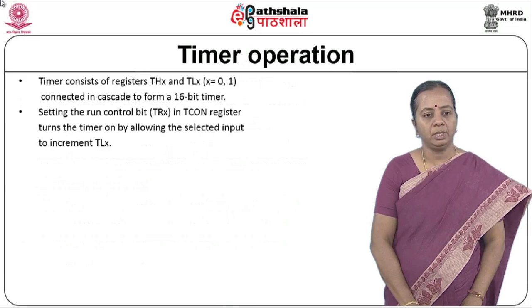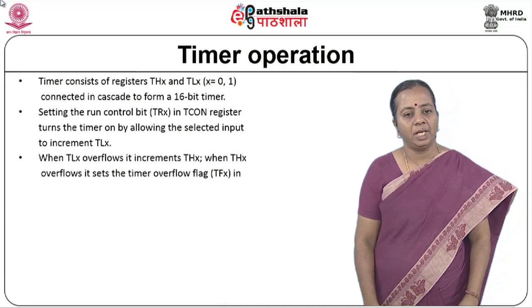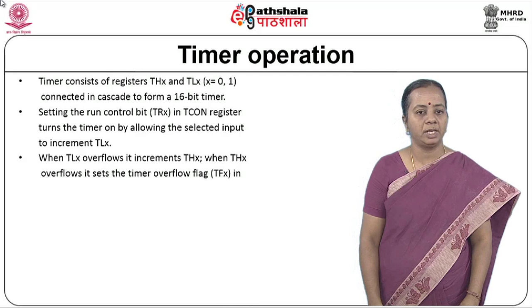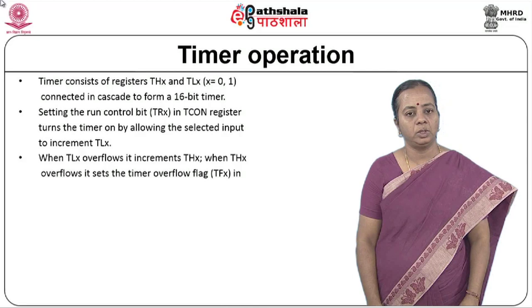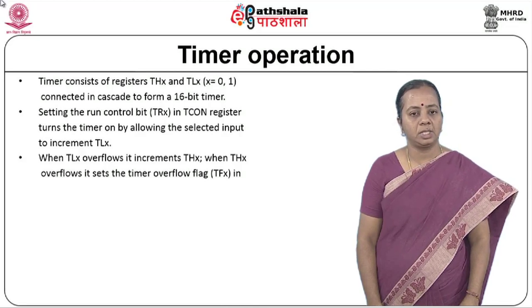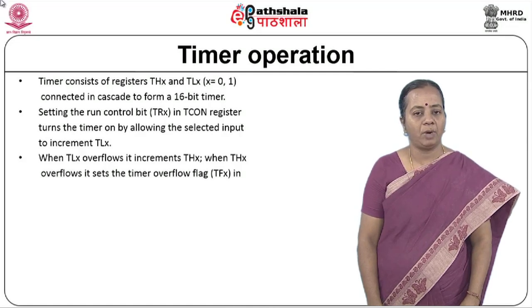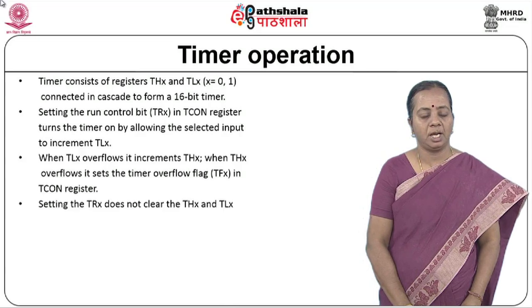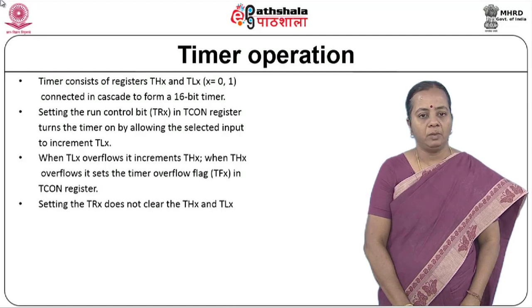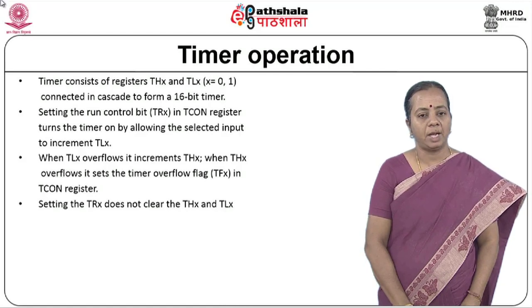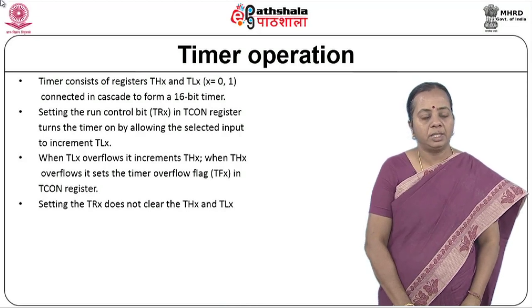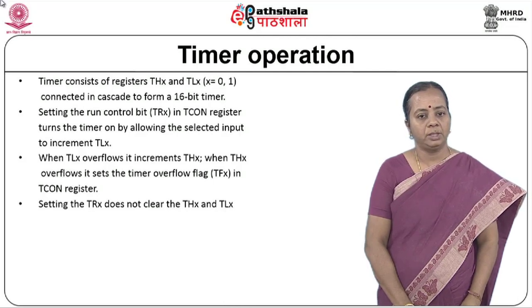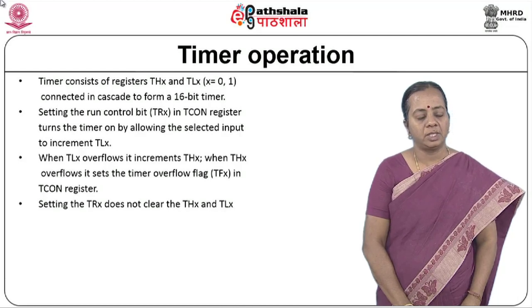For timer operation, we have two registers: TH and TL. Because we have two timers, TH0 and TL0 combined together for timer 0, and TH1 and TL1 combined for timer 1. We have a TR bit — TR0 or TR1 — available in the TCON register, which turns the timer on by setting it to 1. Each time the timer increments in timer mode, TLX increments by 1. If TLX overflows, THX gets incremented. If both overflow, the overflow flag TF is set to 1 in the TCON register.